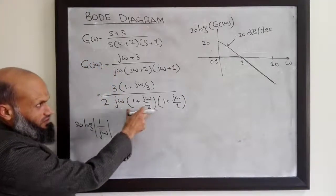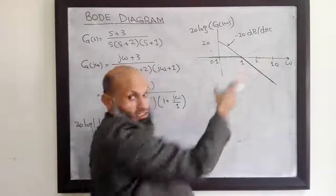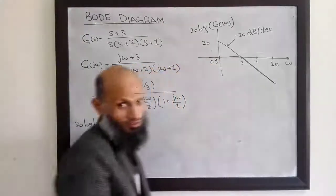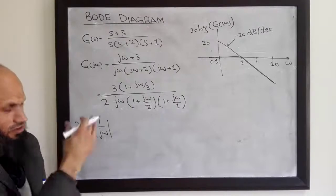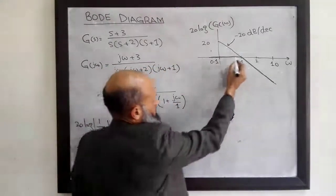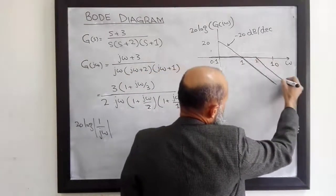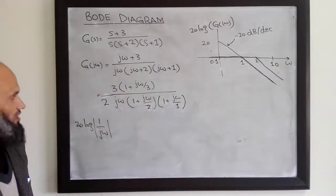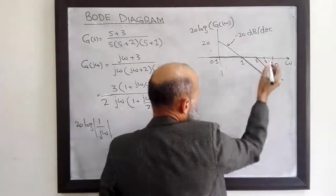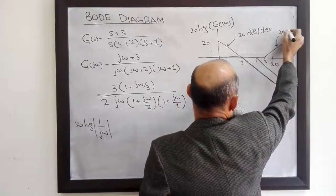For the factor with corner frequency 2, the value 2 appears somewhere on the logarithmic scale. On graph paper you can easily locate this frequency. The magnitude plot for this factor is 0 dB up to the corner frequency, and after that it is minus 20 dB per decade. The magnitude plot for the factor with corner frequency 3 is 0 dB at low frequencies, and then there is a rise of plus 20 dB per decade after the corner frequency.